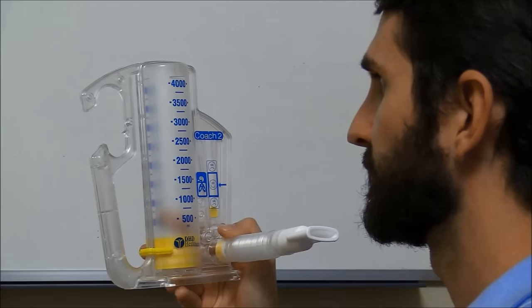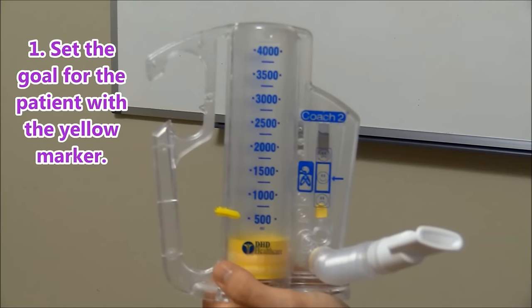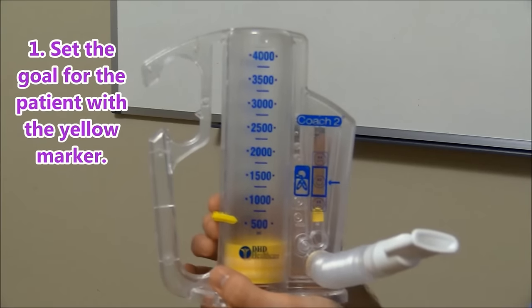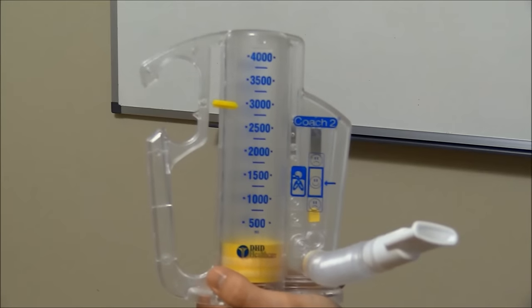Now let's look at the right way to use the incentive spirometer. Okay, first what you want to do is set the goal for the patient with the yellow marker so they know where they need to get whenever using this incentive spirometer.